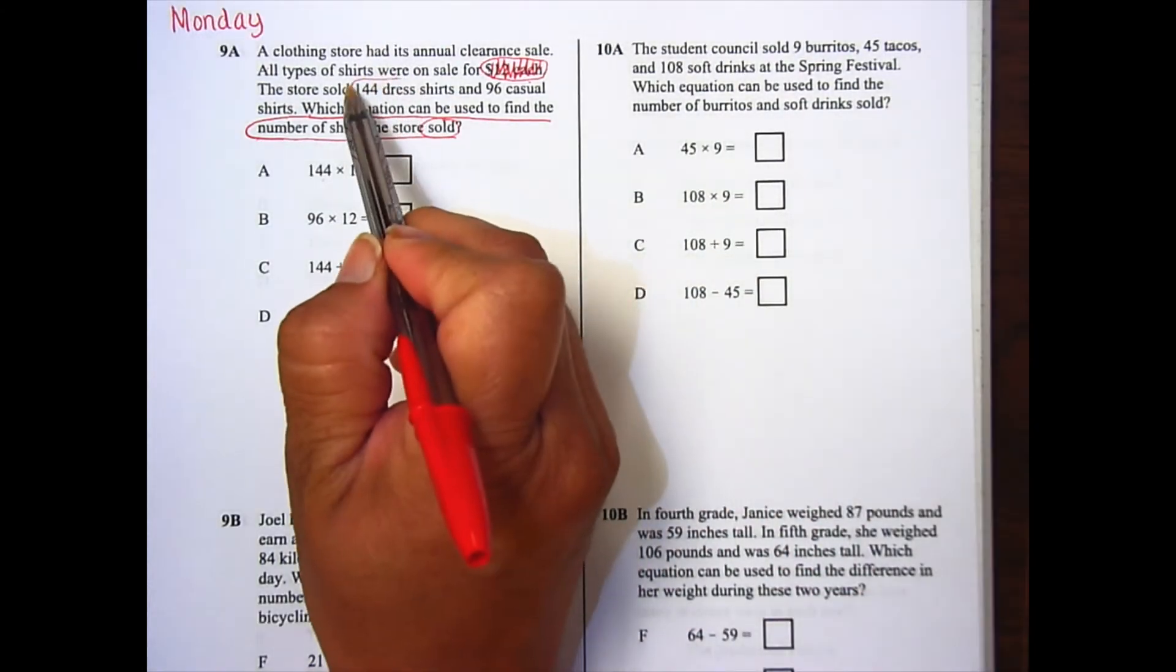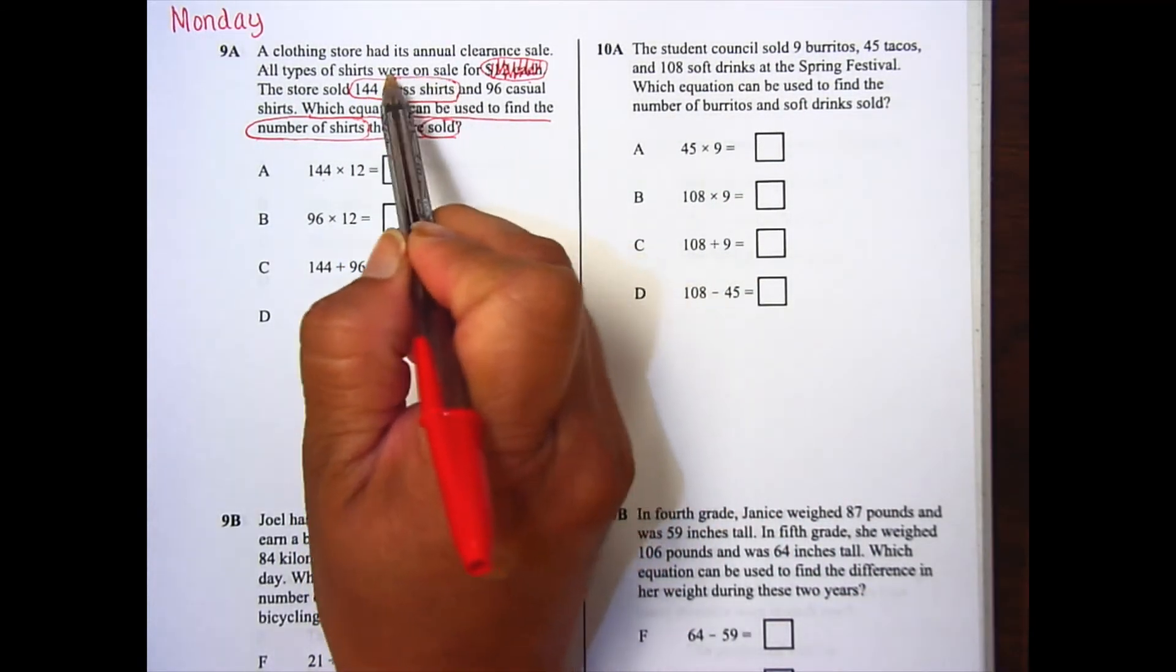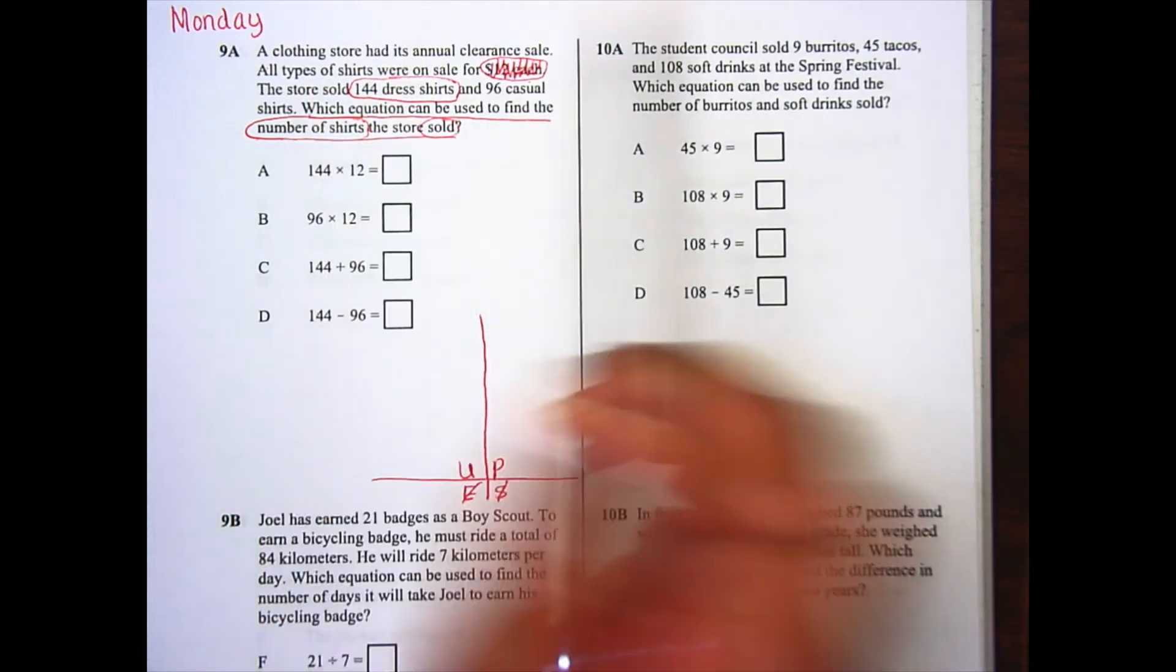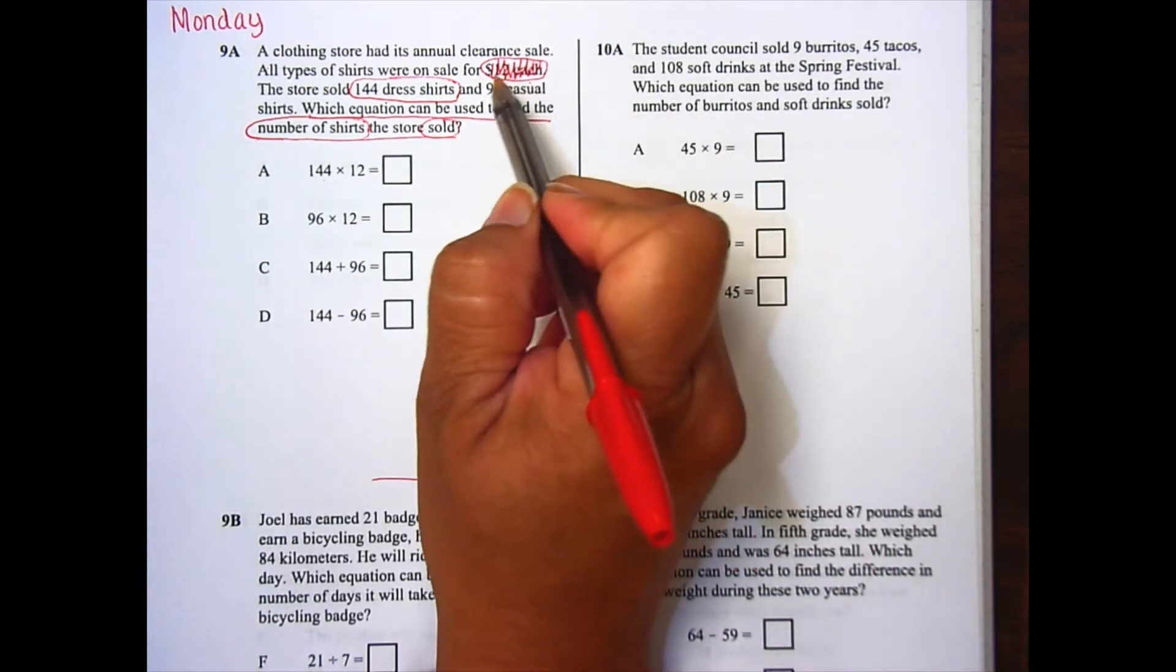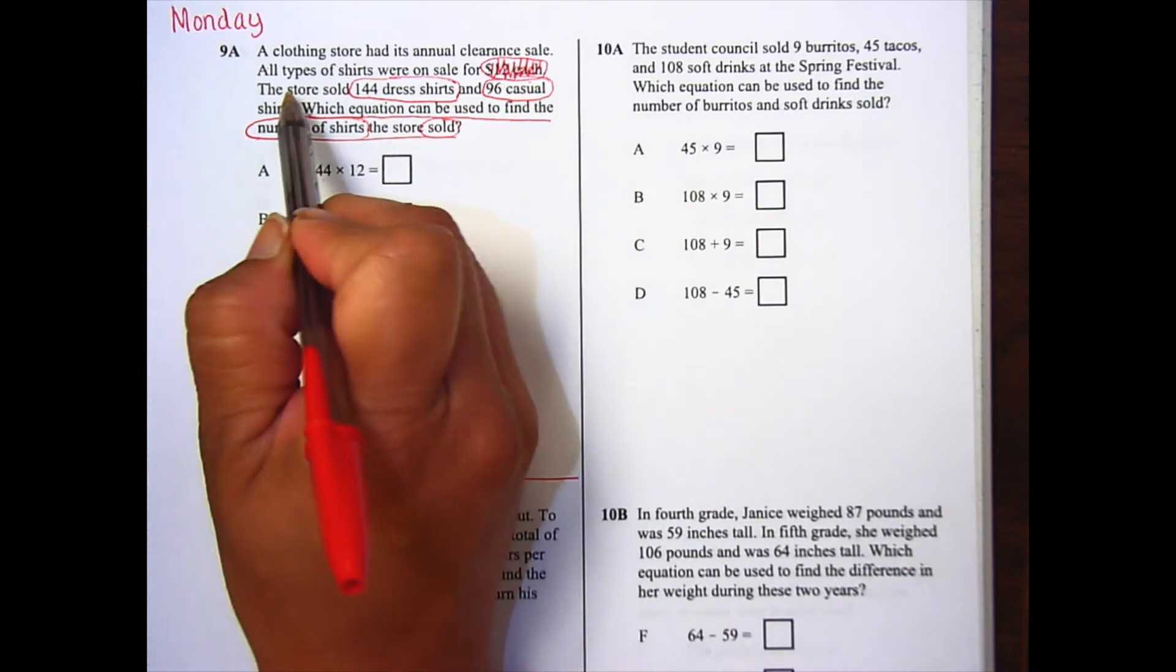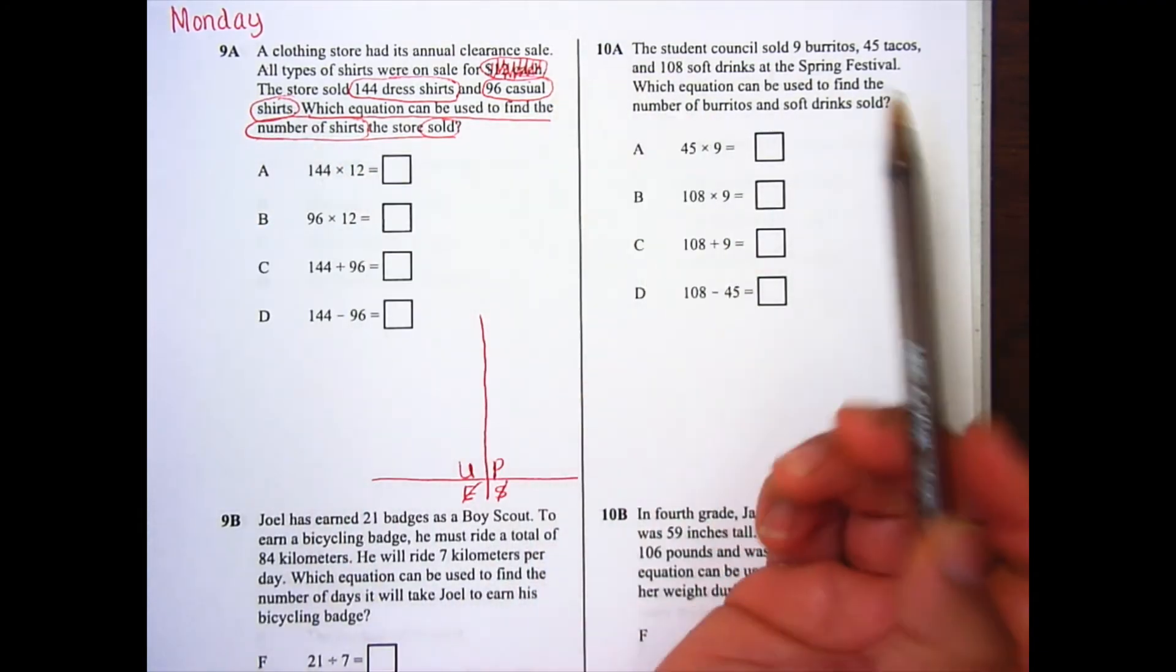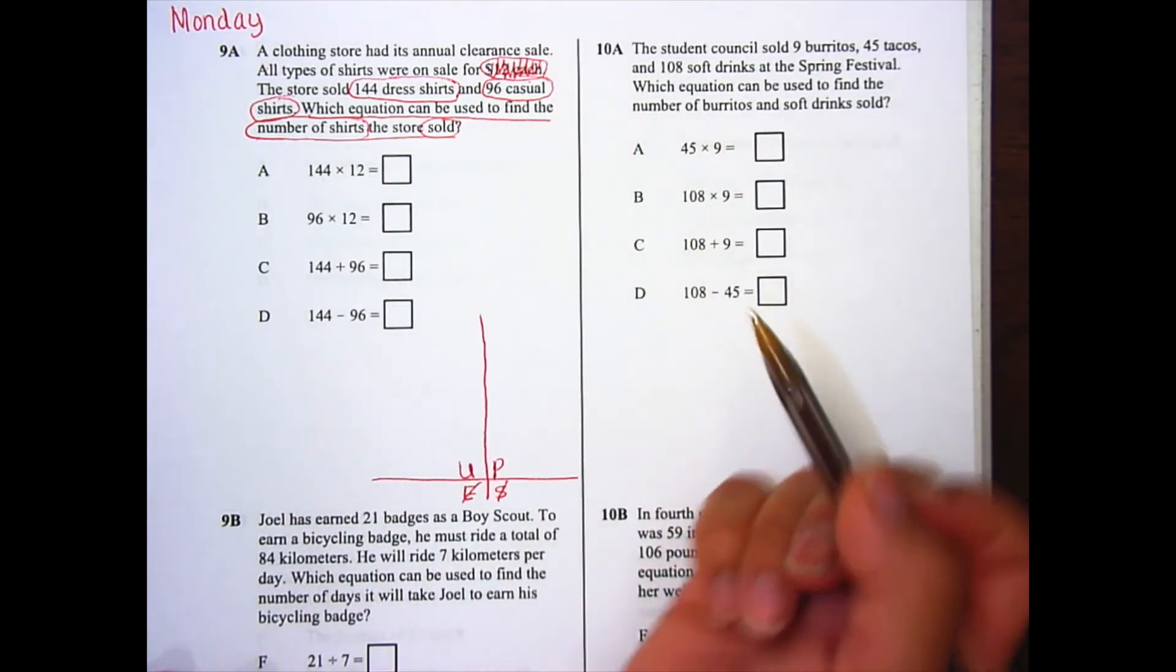The store sold 144 dress shirts. So are these shirts? Yes. Did they sell them? Yes. So I need that information. 96 casual shirts. Are those shirts? Yes, they are. So I need that information as well.